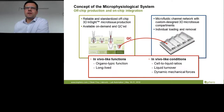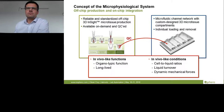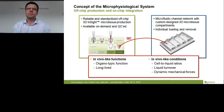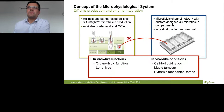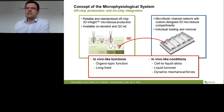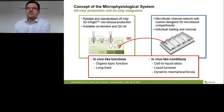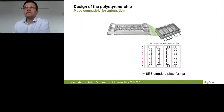We addressed this using our already reliable and standardized off-chip microtissue production via the hanging drop method. We can QC the microtissues first to ensure functionality, then transfer them into a microfluidic system where they are cultured inside microfluidic channels, interconnected with each other. There they experience higher in-vivo-like conditions — higher cell-to-liquid ratios, better liquid turnover through convective flow, and dynamic mechanical forces. The chip I want to present in more detail is a polystyrene chip integrated into a frame within the SBS standard plate format.